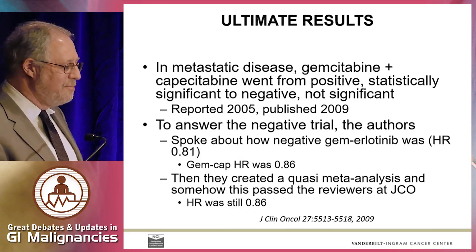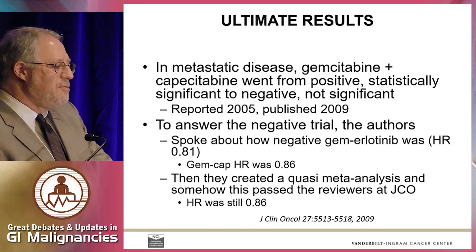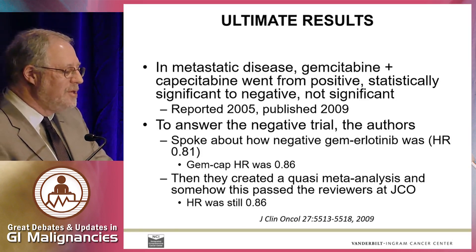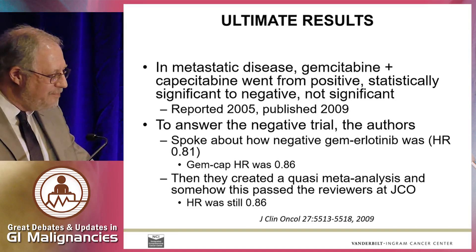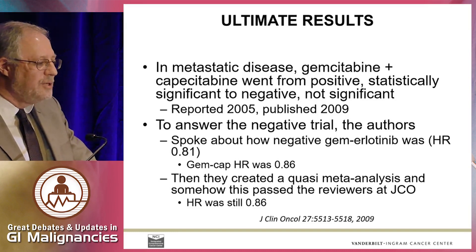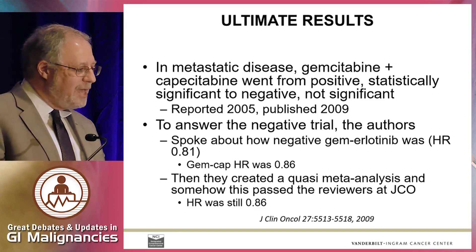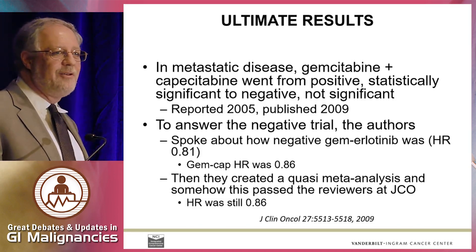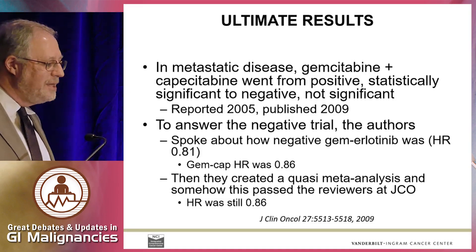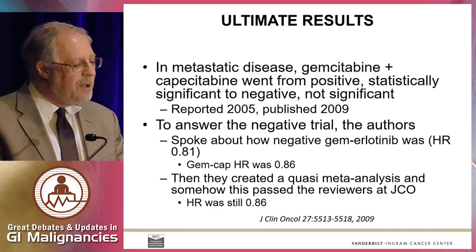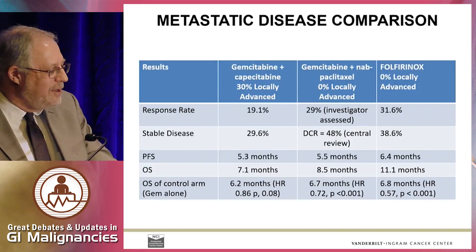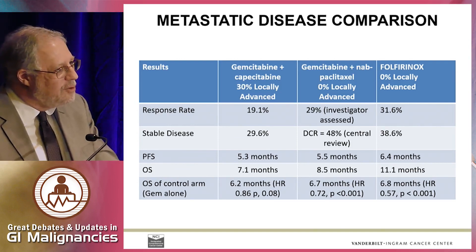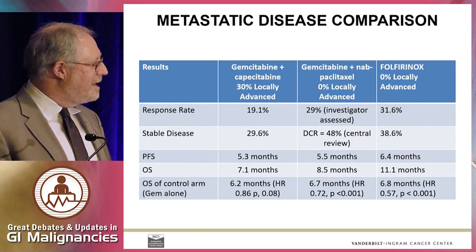Just ignore the fact that we get a little bit of obfuscation from this group. In metastatic disease — because I actually do respect these colleagues, but I impugn their reputations regularly — GemCape went from statistically positive to negative, not significant, which they published about five years later. To answer the negative trial, the authors spoke about how negative GemRelatofinib was with a hazard ratio of 0.81, and how positive their GemCape was with a hazard ratio of 0.86. It's how you present your data that matters, not what your actual data is, apparently. They claimed that GemCape should be a standard of care when they didn't have a randomized trial that was positive. I'm pointing this out not because I believe GemCape isn't a reasonable potential regimen in the adjuvant setting, but because this group has had a history of presenting early data that later turned negative, but we saw it a lot later.